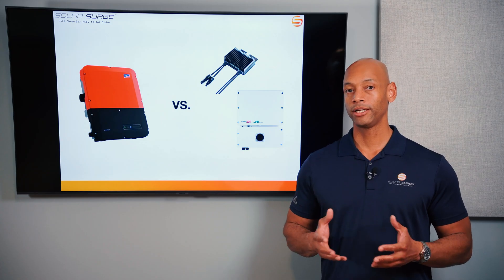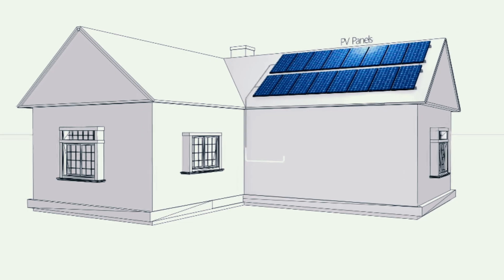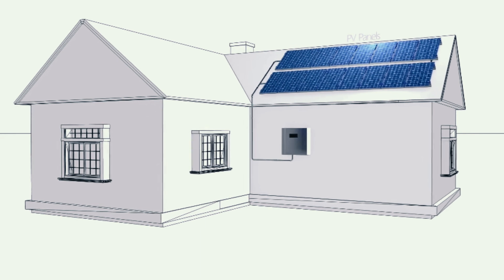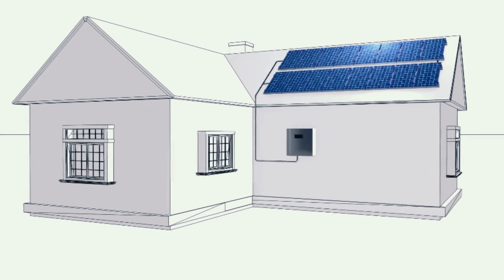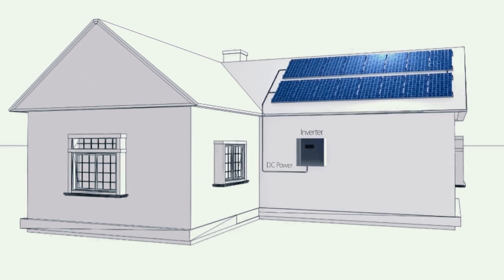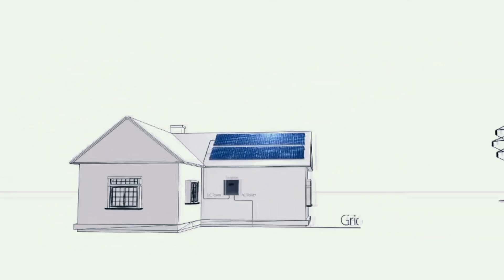Solar panels themselves, and batteries for that matter, are both direct current devices, which means that if you want to turn that electricity into usable electricity for your home or for selling back to the power company, there has to be an inversion somewhere in the system. What the inverter does is very simply a special type of electrical transformation that converts direct current electricity to alternating current electricity.